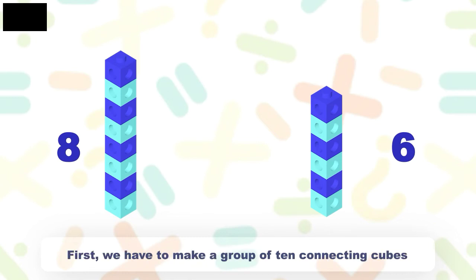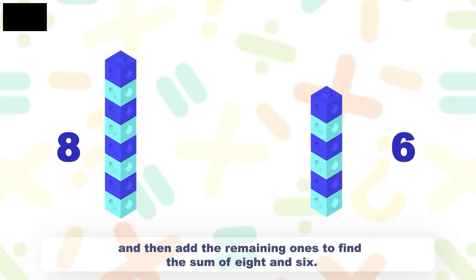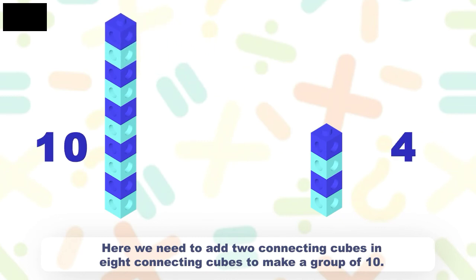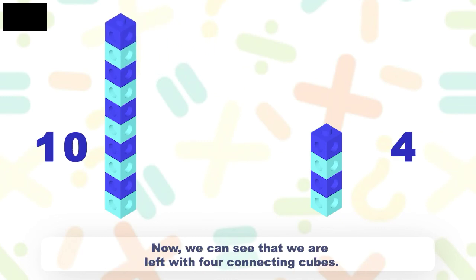First, we have to make a group of 10 connecting cubes and then add the remaining ones to find the sum of 8 and 6. Here, we need to add 2 connecting cubes to 8 connecting cubes to make a group of 10. Now we can see that we are left with 4 connecting cubes.